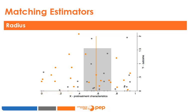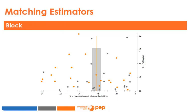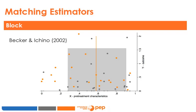The block matching estimator, or stratified matching estimator, enables us to adjust the window of observations included depending on the data itself. I will choose small blocks when there is variability and observations are well distributed, and allow a larger window whenever I have fewer observations or when they are not evenly distributed. In general, this approach by blocks is not good at dealing with regions where there is no common support. For more in-depth knowledge on block matching estimators, you can read the 2002 article by Becker and Ichino.